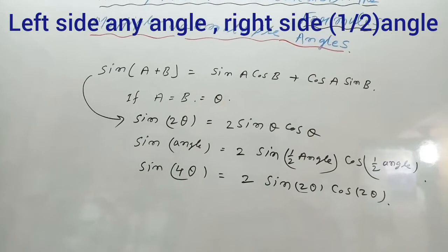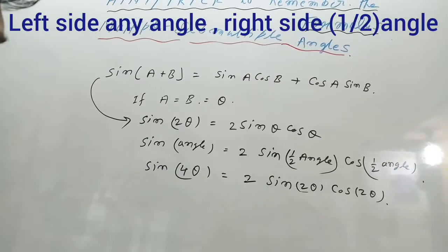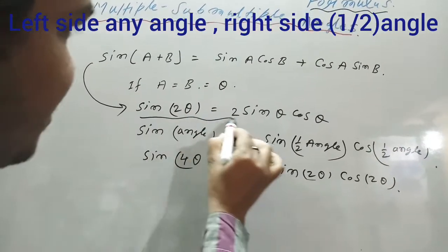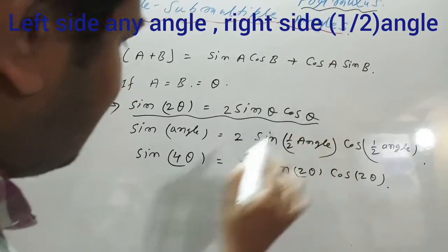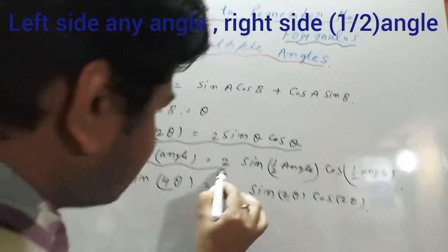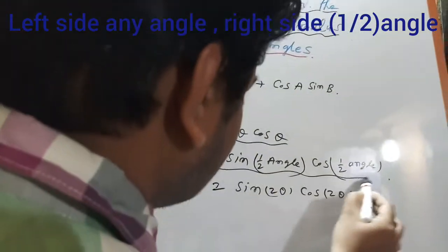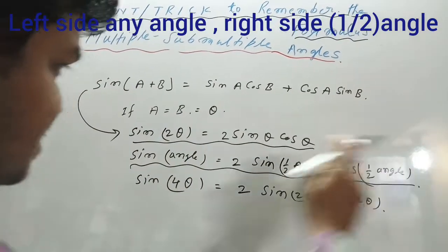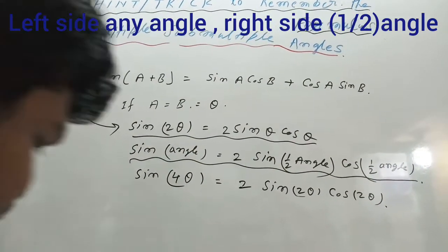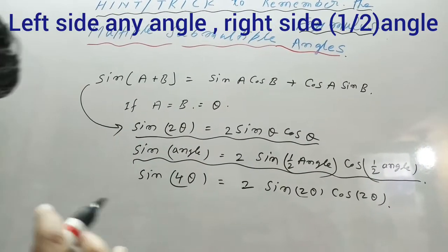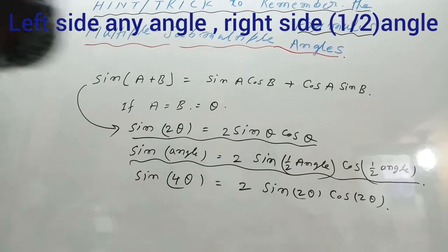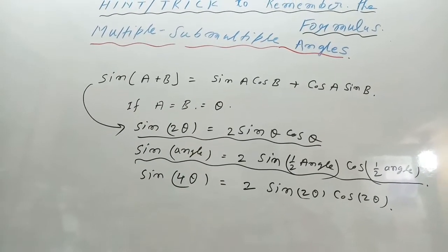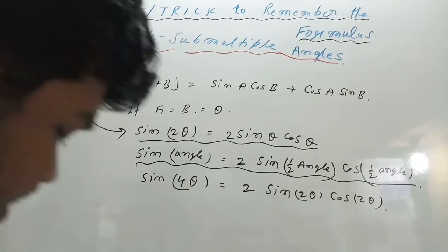What is the difference between multiple and submultiple? The first form — sin 2θ = 2 sin θ cos θ — represents the multiple, and the second form — sin θ = 2 sin(θ/2) cos(θ/2) — represents the submultiple. This is the memorization technique.